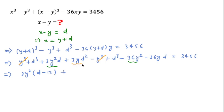And also I will take common 3yd from these two terms, so I can write 3yd after taking common, here d and minus 12.